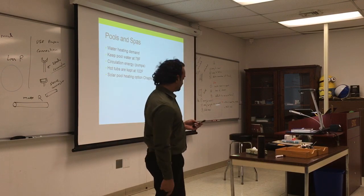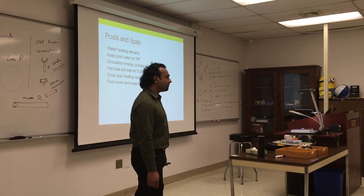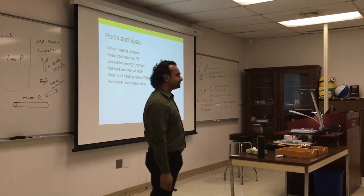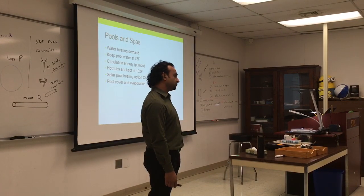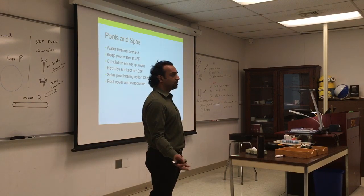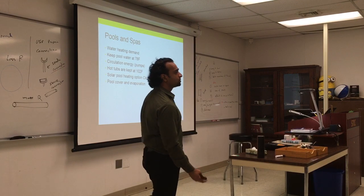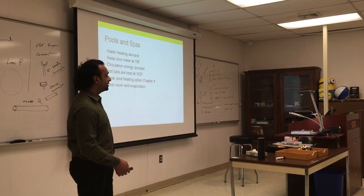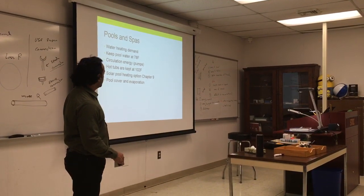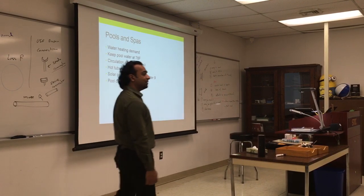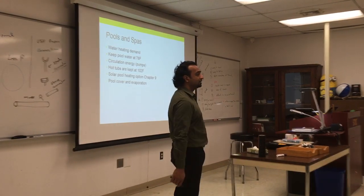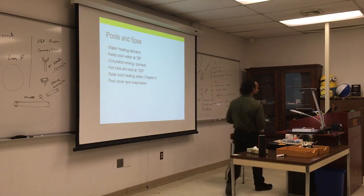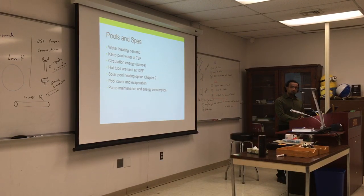Some solar heating systems are passive, working by natural convection, and some are active with pumps. Regarding indoor pools: the room is usually warm because the pool water is losing heat to the room, so the pool is actually heating the room. You need to insulate the room as well as heat the pool. Pool covers are important — they eliminate evaporation and keep the heat inside the pool.